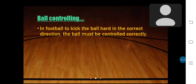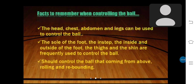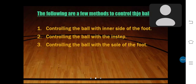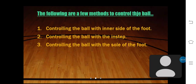Now I am covering ball controlling. In football, to kick the ball hard into the correct direction, the ball must be controlled correctly. Factors to remember when controlling the ball: the head, chest, abdomen, and legs can be used to control the ball. The sole of the foot, the instep, and the inside and outside of the foot, as well as the thighs and the shin, are frequently used to control the ball. You should control the ball coming from above, rolling, and rebounding. The three methods to control the ball are: controlling with the inner side of the foot, with the instep, and with the sole of the foot.